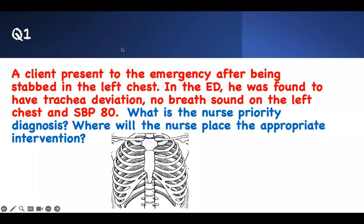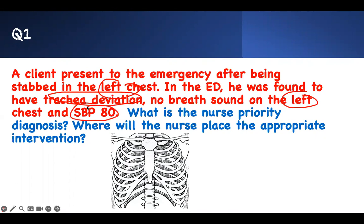First question — it's a critical thinking question. What is the nurse's priority diagnosis and where would the nurse place the appropriate intervention? A client presents to the emergency room after being stabbed in the left chest. In the emergency room, it was found to have tracheal deviation — keyword. No breath sound on the left side, and a systolic blood pressure of 80. What is the nurse's diagnosis and where would the treatment be placed?